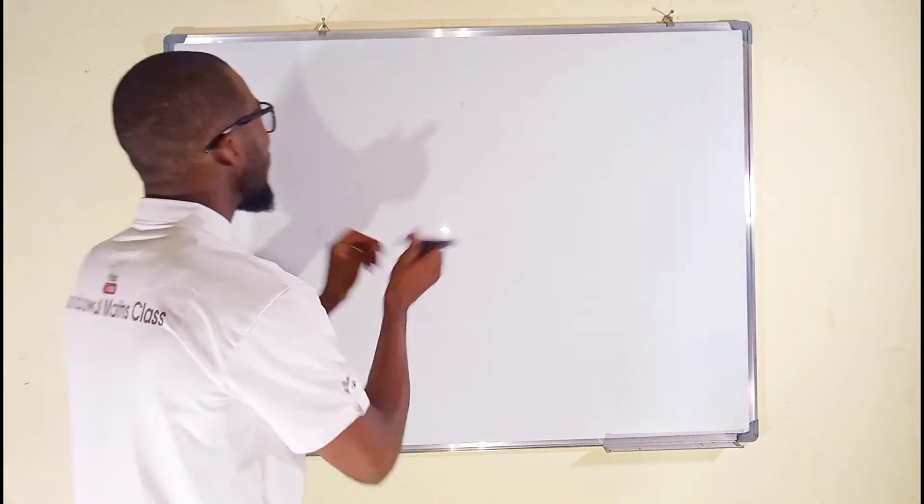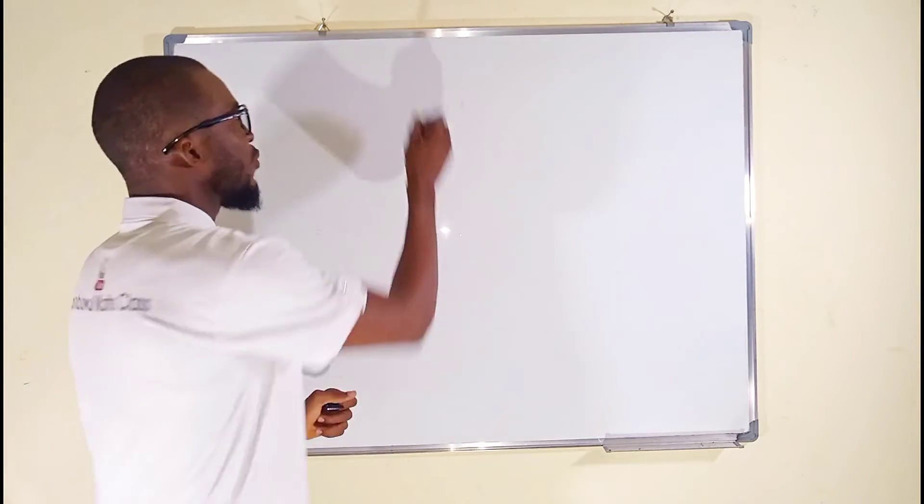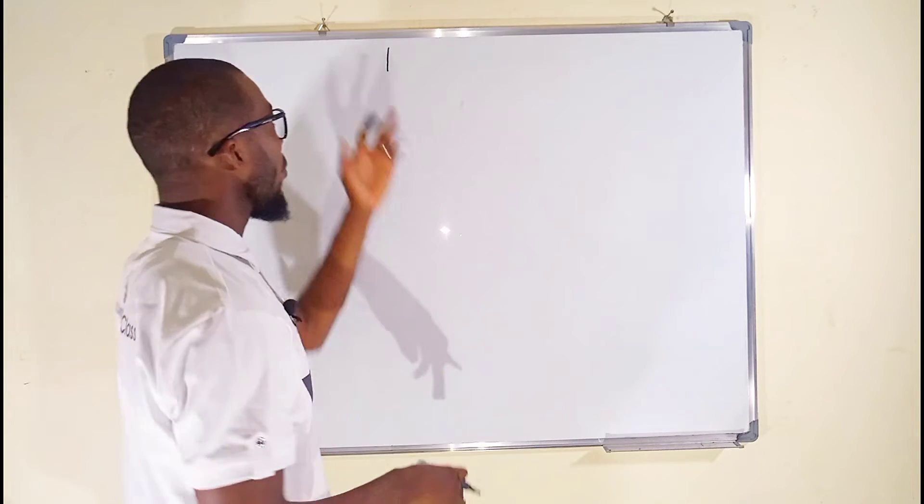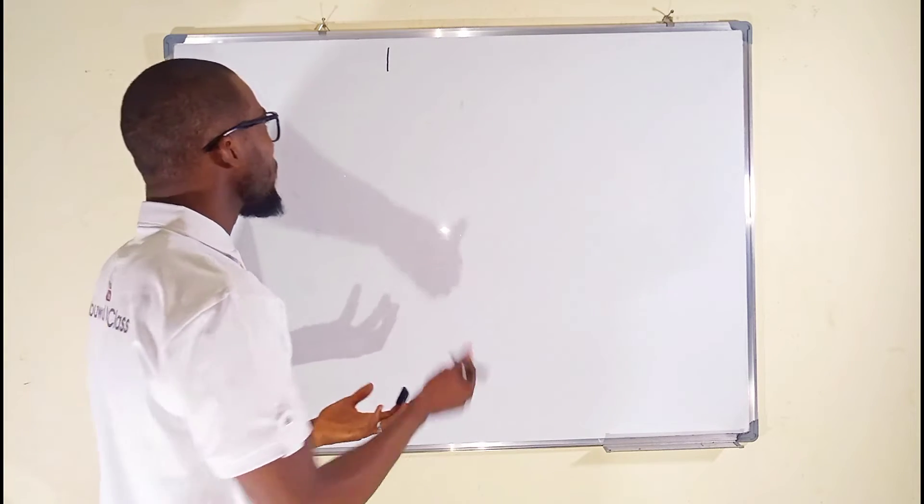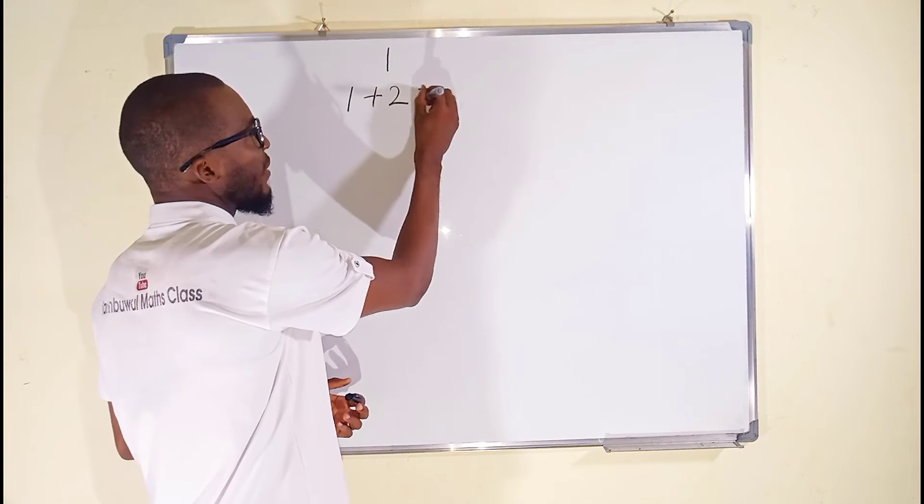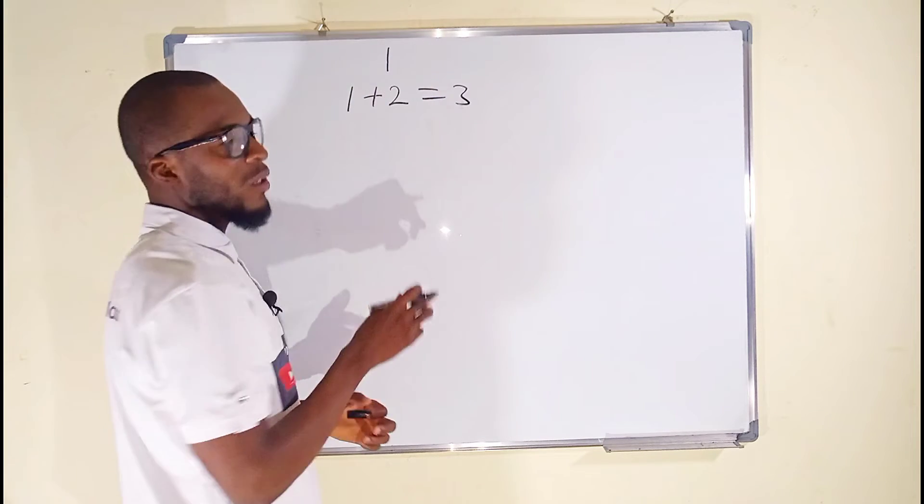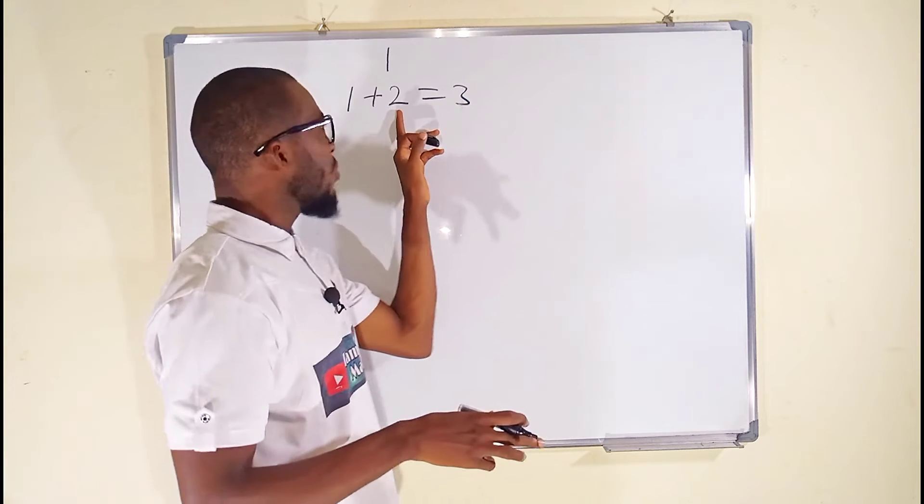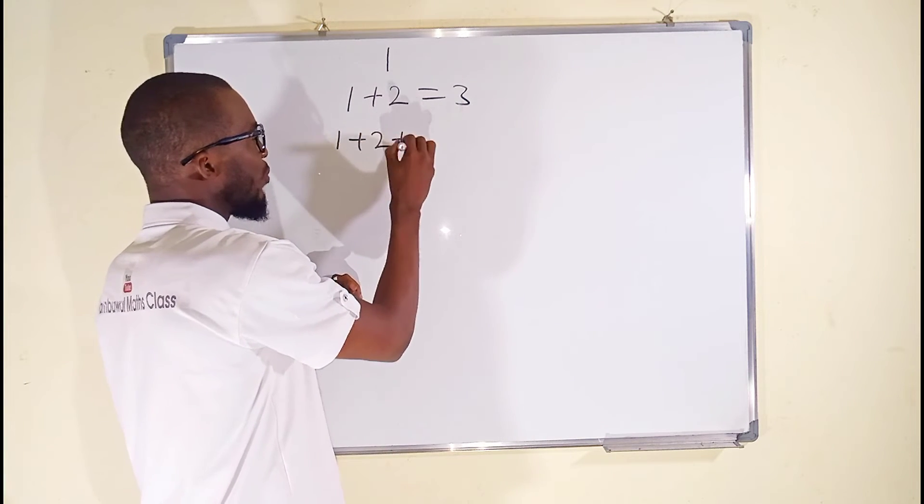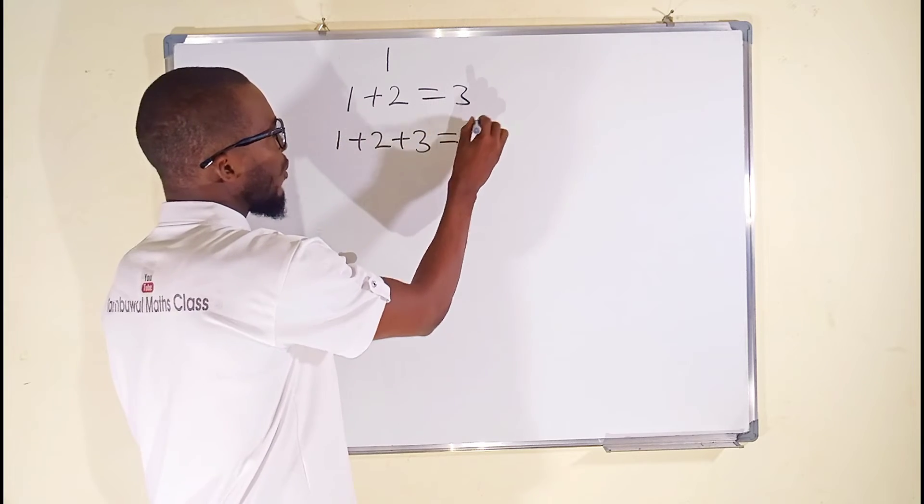This is what I mean. The smallest natural number is 1 because we say natural numbers are the counting numbers. If you add it to the next one, which is 2, you are getting 3. You can see 3 is bigger than 1. The next number after 2 is 3. So we can see 1 + 2 + 3 and this is equal to 6.